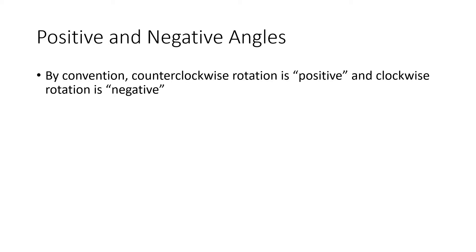By convention we talk about counterclockwise rotation as being positive rotation and clockwise rotation as being negative rotation. There's really no inherent reason why one is called positive and one is called negative, but it's useful for us to distinguish clockwise versus counterclockwise in this way. It also turns out that some mathematical formulas are made a little bit nicer if we adopt this convention. So even though it might seem backwards, in mathematics counterclockwise is positive rotation and clockwise is negative.